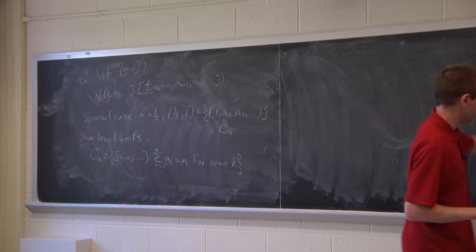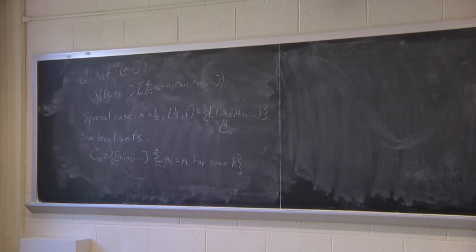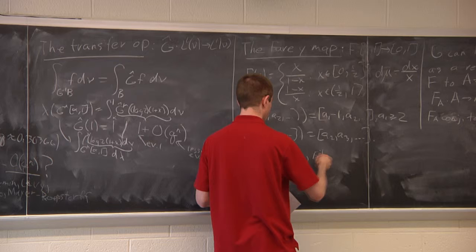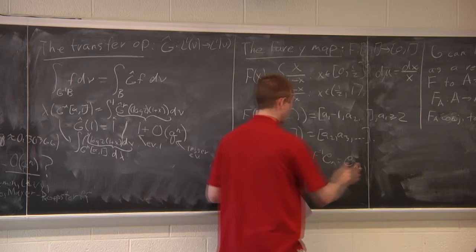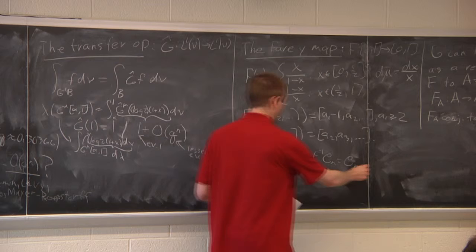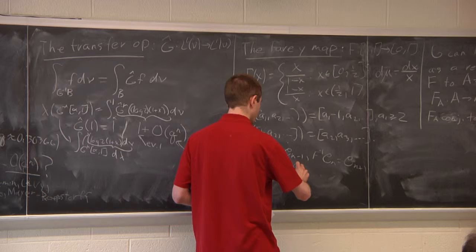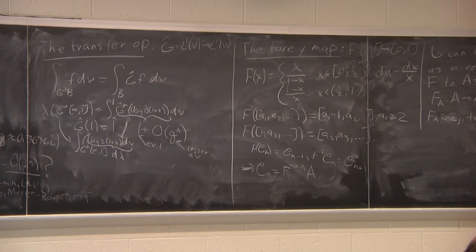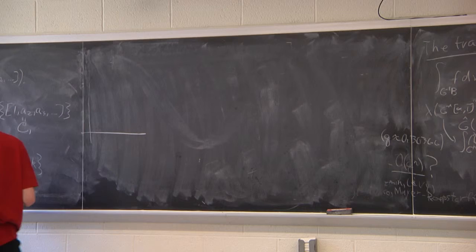In general, we let Cₙ be the set of all continued fractions such that the sum from i=1 to k of Aᵢ equals n for some k. So at any stopping point the partial digits sum to n. The key observation is: if we act on Cₙ by F we get Cₙ₋₁, and the inverse image of Cₙ is Cₙ₊₁. Therefore Cₙ equals the (n−1)st inverse image of C₁, which we also call A.